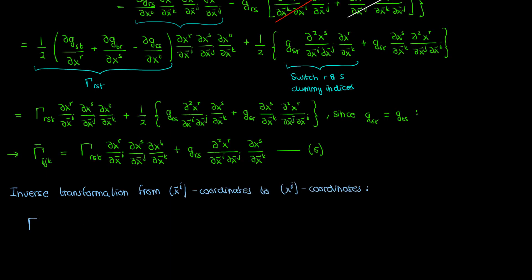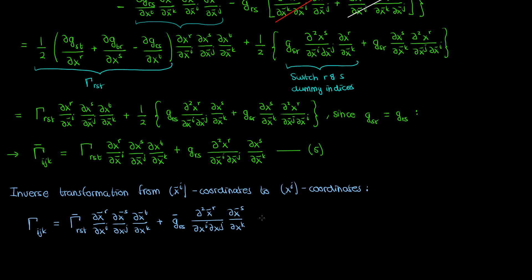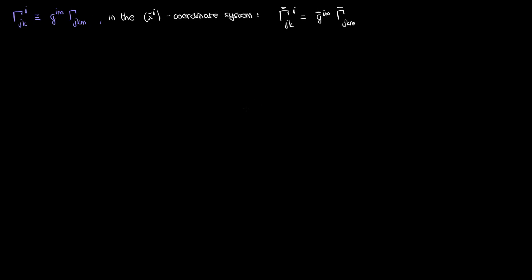The inverse transformation equation — going from barred coordinates back to unbarred coordinates for the Christoffel symbol of the first kind — looks very similar. You just take equation 5 and change the barred terms to unbarred and the unbarred terms to barred, giving equation 6. So we've determined the transformation law of the Christoffel symbol of the first kind. Let's now work on the transformation law of the Christoffel symbol of the second kind. Recall that the Christoffel symbol of the second kind is given by the inverse metric tensor contracted with the first kind symbol.